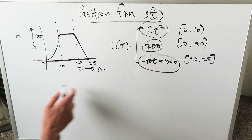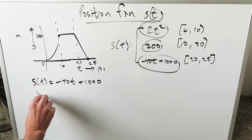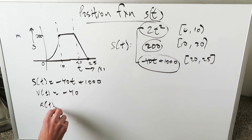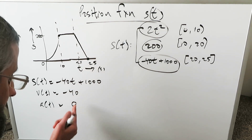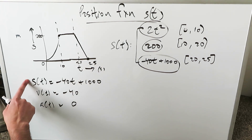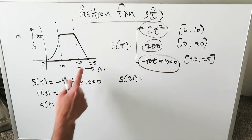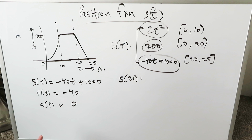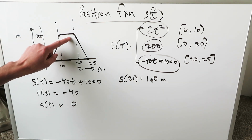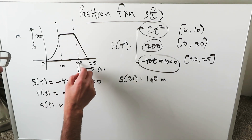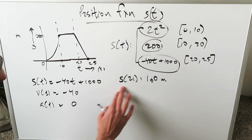Now for the last interval from 20 to 25 seconds. The position function is minus 40t plus 1000. Do the derivative and you get velocity equal to minus 40. Do the derivative of that constant and you get 0. You're going from a linear diagonal line to a horizontal line to 0. For the position analysis, at 21 seconds you get minus 40 times 21 plus 1000, which is 160 meters away from rest position. The object went furthest at 200 meters, and now it's 160 meters away — as you go from 20 to 25 seconds, the object which was 200 meters away is slowly coming back to the original rest position. As you put in different seconds, the meters get closer and closer to 0.